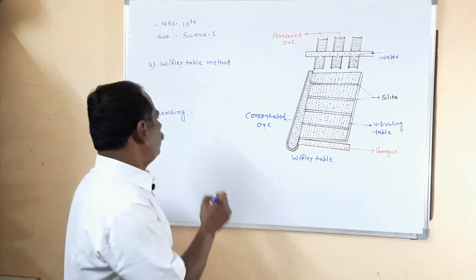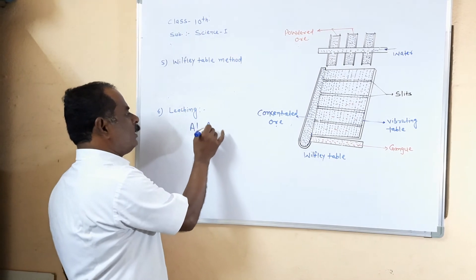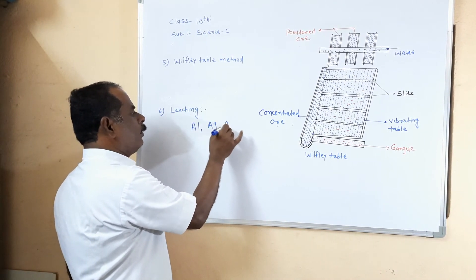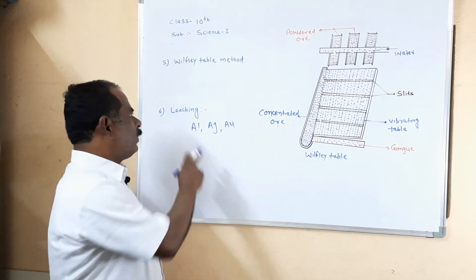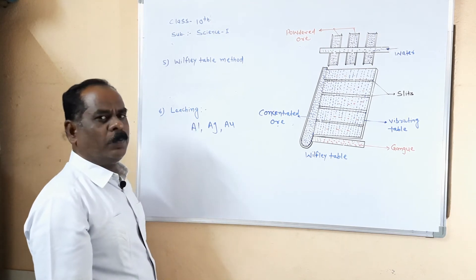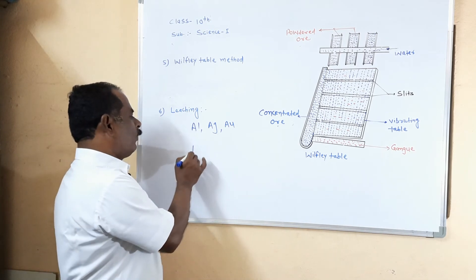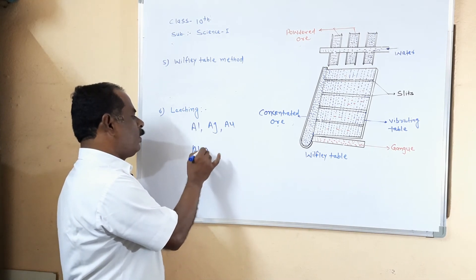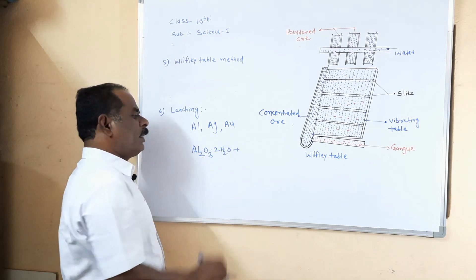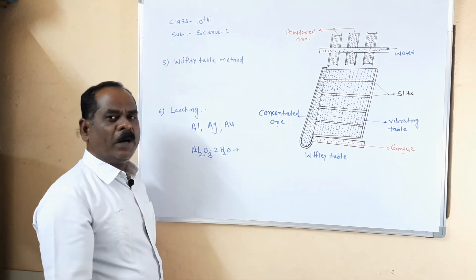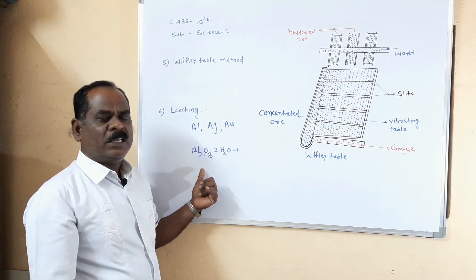For example, the ores of aluminium, silver, and gold are concentrated using the leaching process. You know that aluminium occurs in the form of bauxite. The formula of bauxite is Al2O3·2H2O. This bauxite contains gangue particles like ferric oxide, titanium oxide, silica, etc.